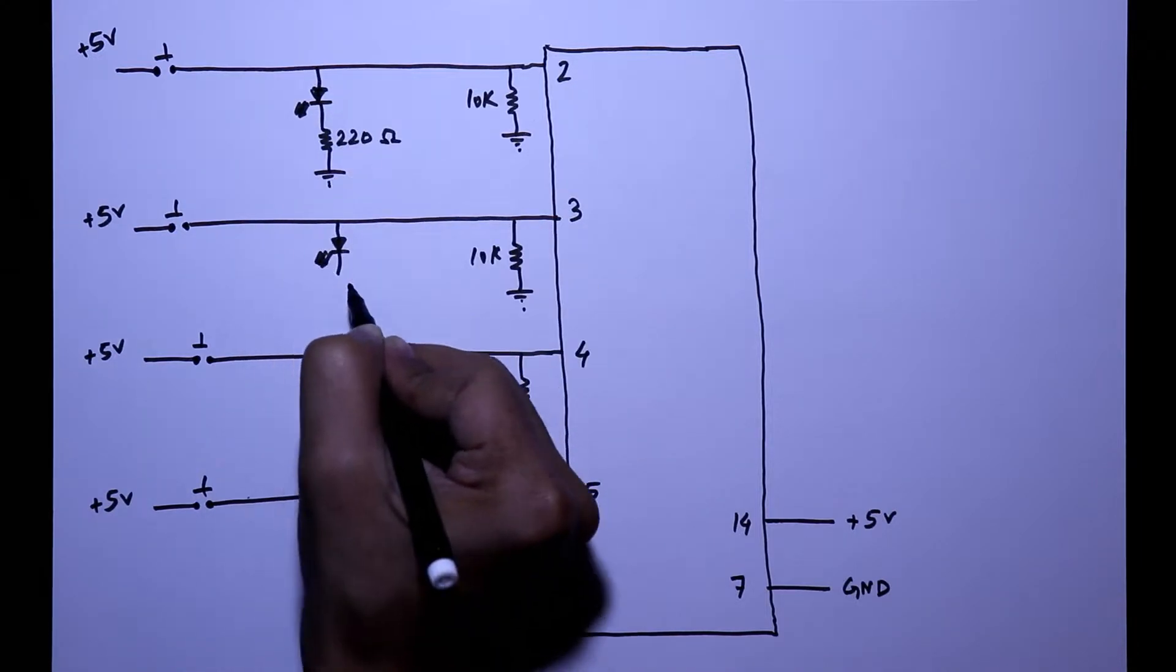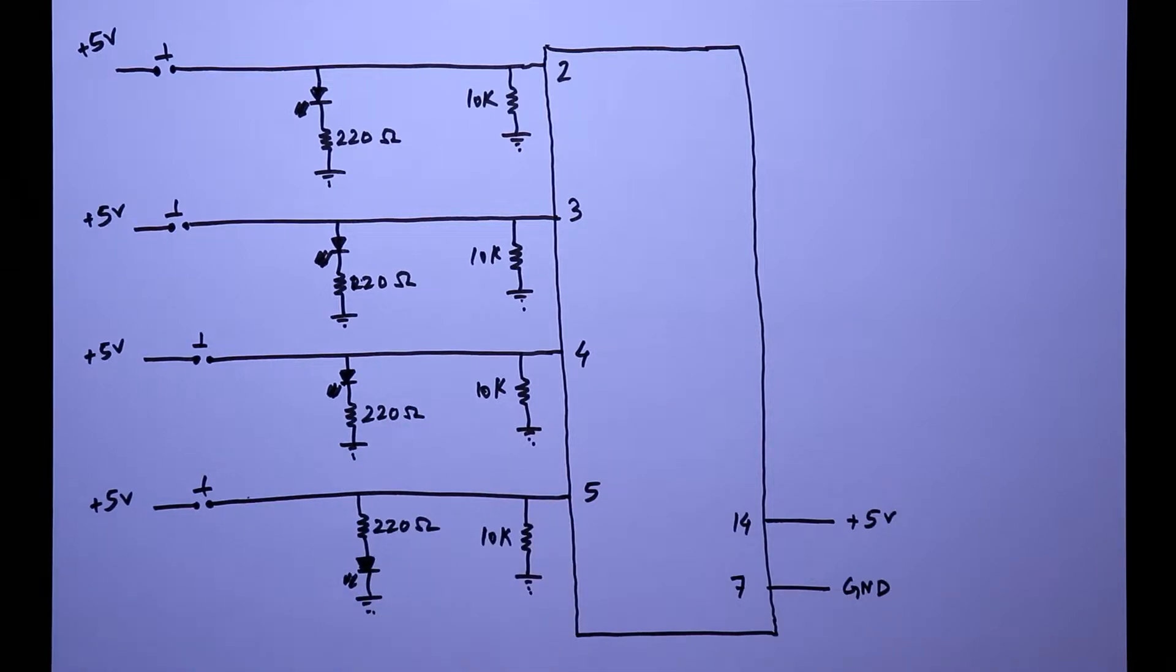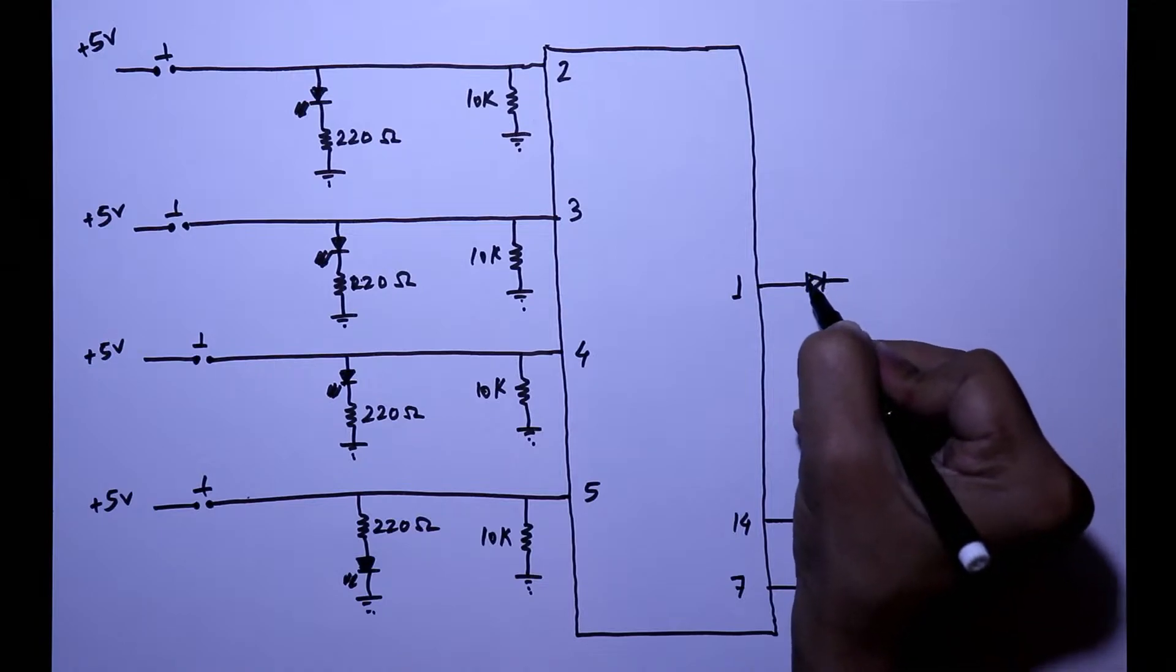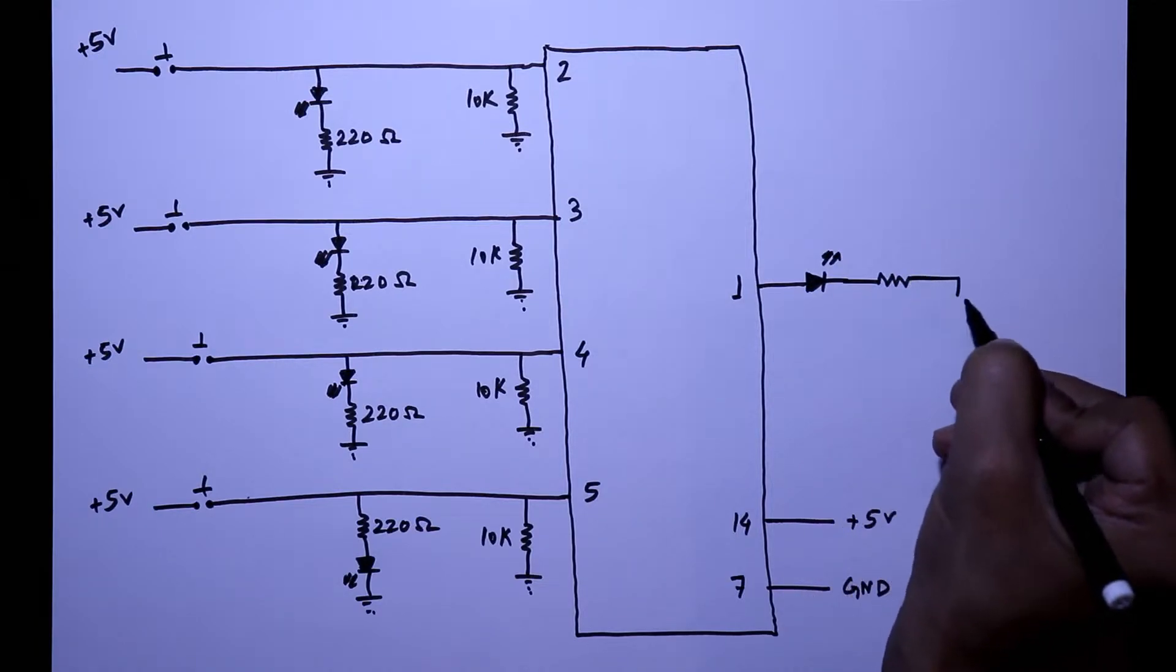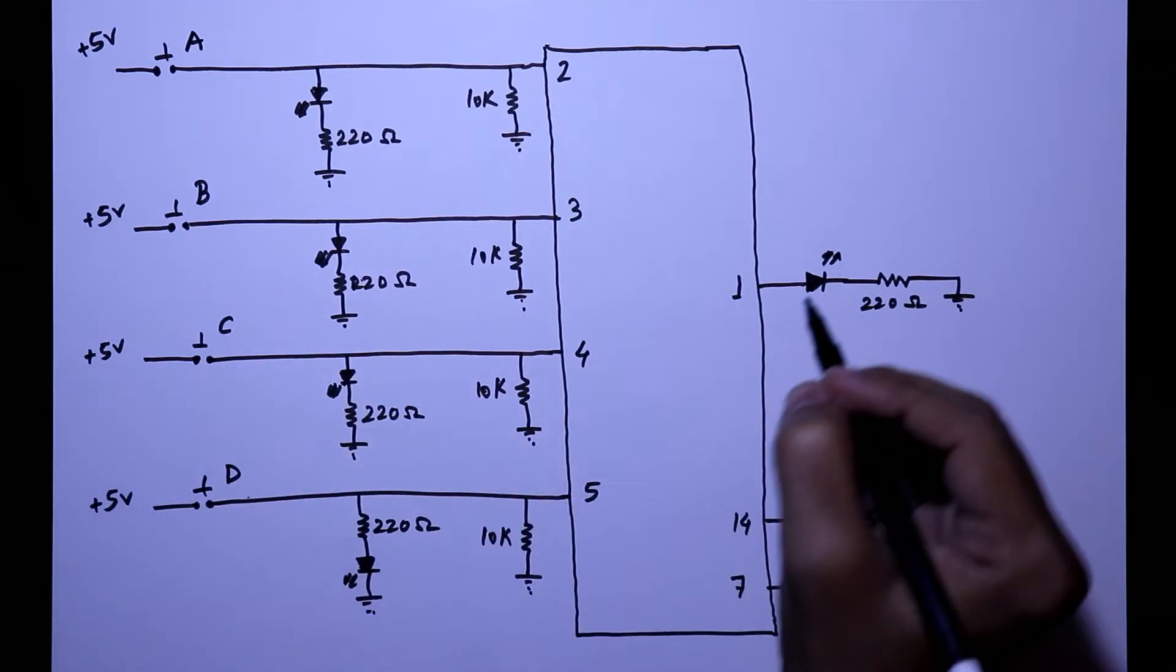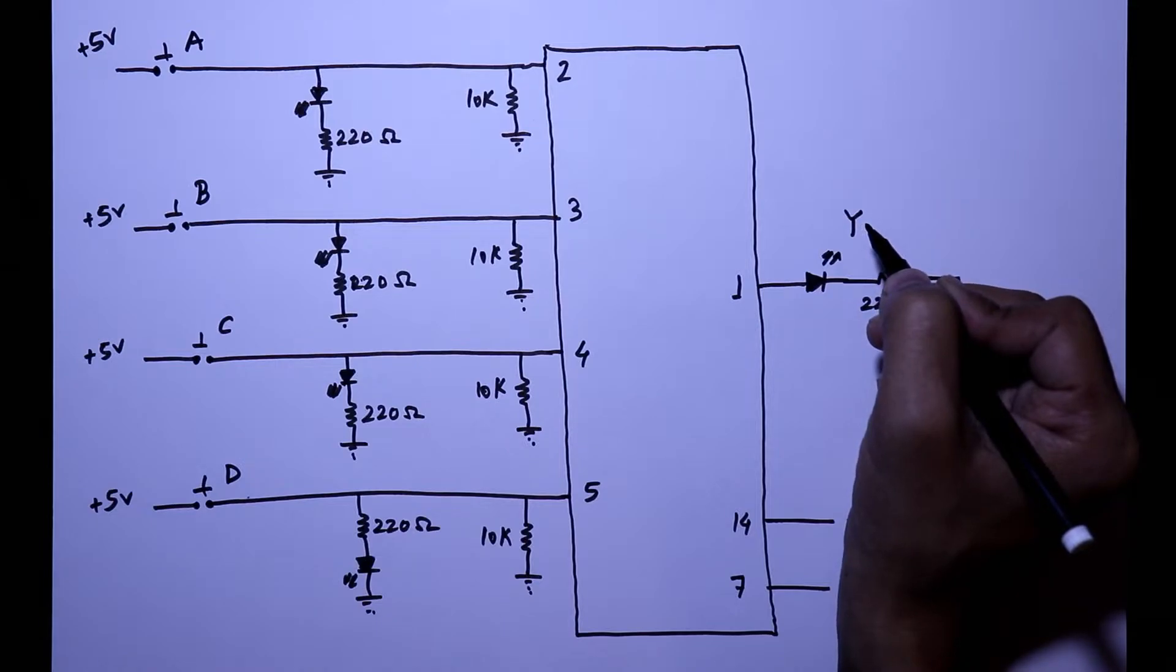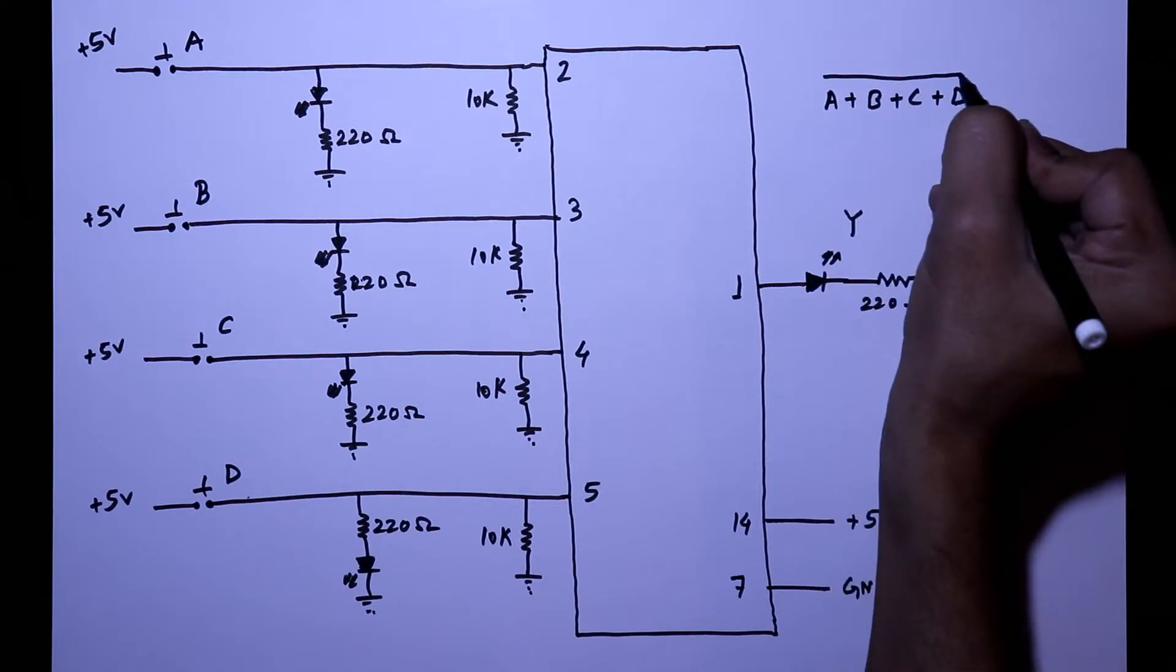To see the input, I am connecting an LED with a series resistor. Pin number 1 is output, and with this also I am connecting an LED to see the output. The value of the series resistor is 220 ohms. This is input A, B, C, and D, and the output is Y. As it is a 4-input NOR gate, the equation will be A plus B plus C plus D whole bar equal to Y.